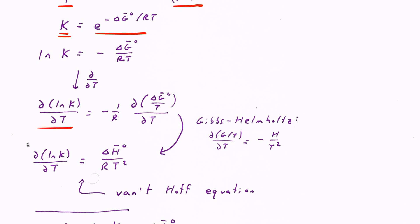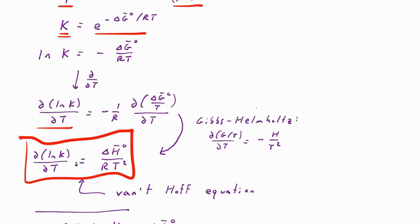That expression — d(ln K)/dT = ΔH / RT² — is called the van't Hoff equation. It's a pretty important expression for predicting how the equilibrium constant changes as temperature changes.